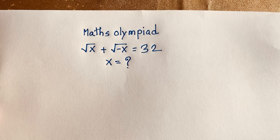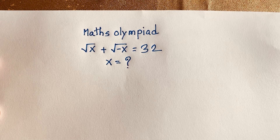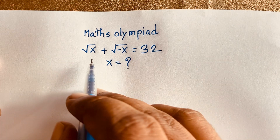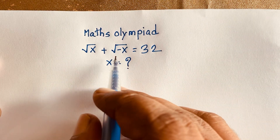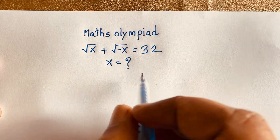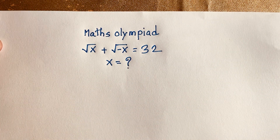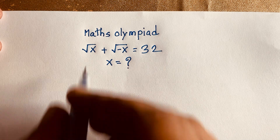Hello everyone. In this video, we have solved this interesting math olympiad question. It is a radical math question. Square root of x plus square root of negative x is equal to 32. x is equal to what? How to solve this question?